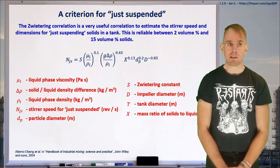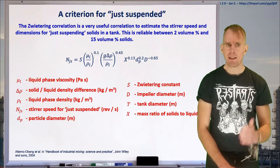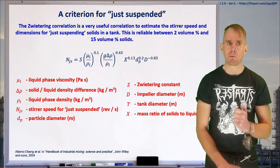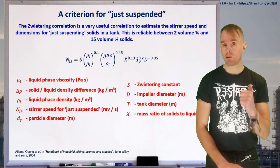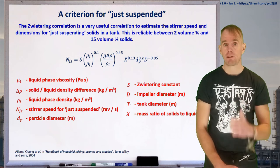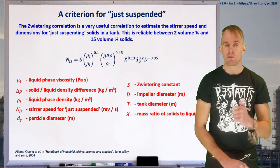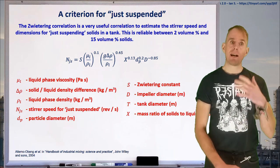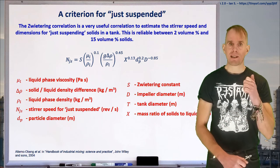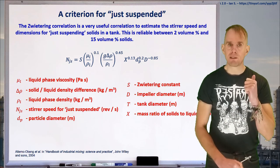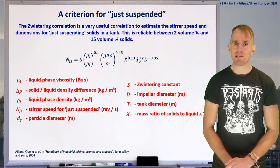If we look at the right-hand side, we've got physical property groupings. You've got mu L over rho L. You've got G delta rho over rho L. You've got information pertaining to your particle. You've got your particle diameter, DP. You've got big D, which is your impeller diameter. X here is your mass ratio of solids to liquids multiplied by 100. And S is a special constant called the Sveterine constant. And that constant depends on the size of your impeller, the size of your tank, and the position of your impeller in your tank.